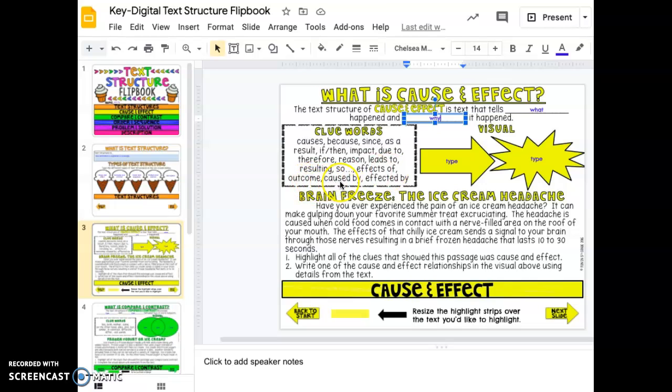For example, have you ever experienced the pain of an ice cream headache? The headache is caused when cold food comes in contact with the nerve-filled area on the roof of your mouth. The effects of that chilly ice cream sends a signal to your brain through those nerves, resulting in a brief frozen headache that lasts 10 to 30 seconds. First thing we need to do is highlight all of the clue words in the passage.